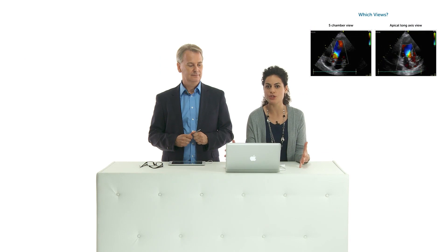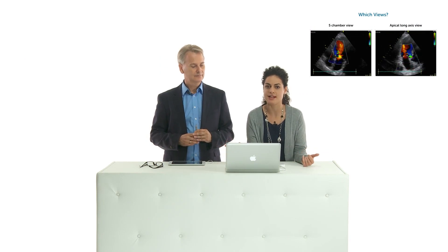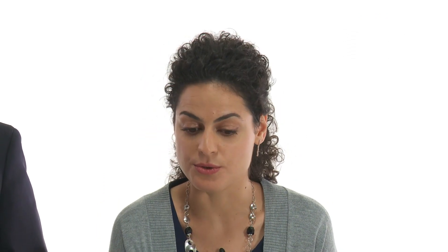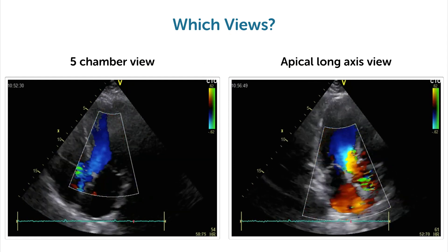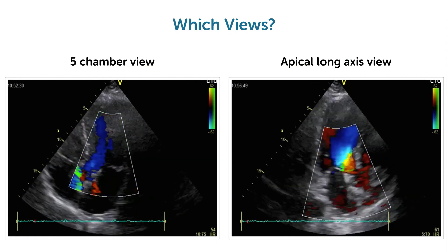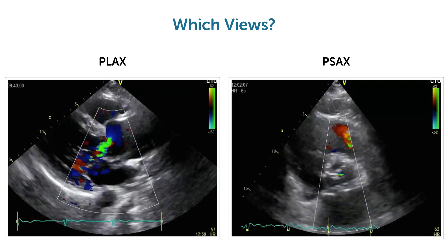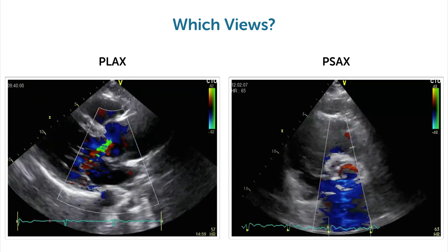Which views are useful to assess AR? The ones which show the aortic valve: the five-chamber view, the apical long-axis view (the three-chamber), the parasternal long-axis view, and the short-axis view.